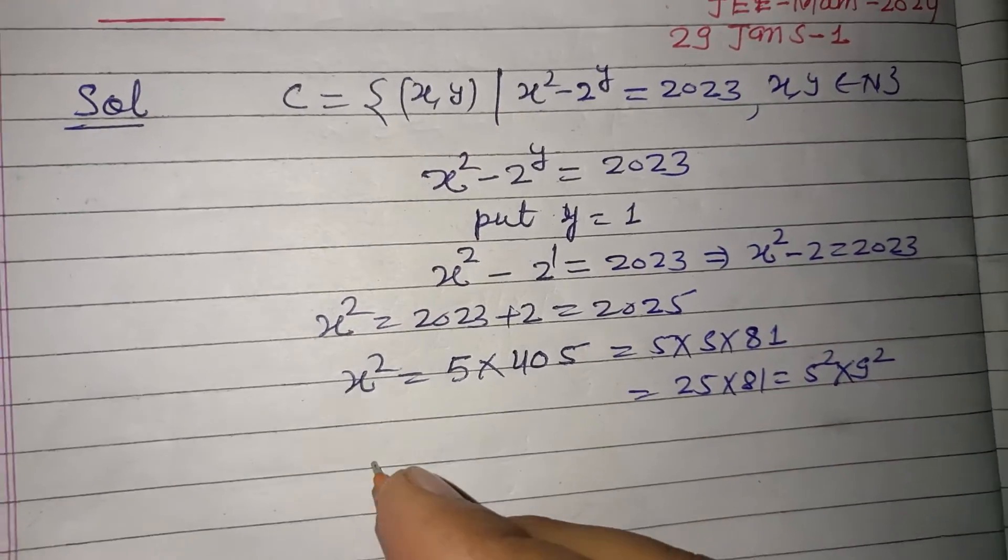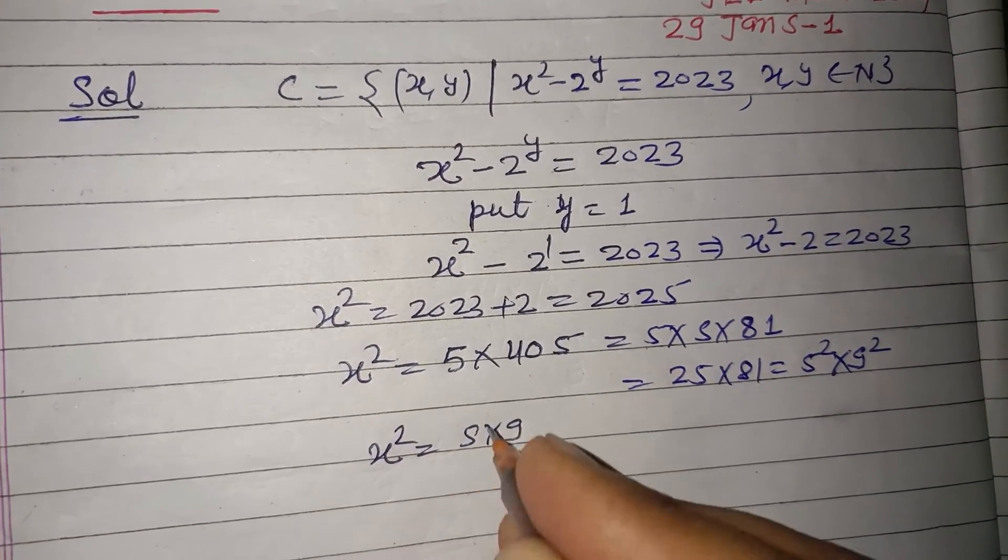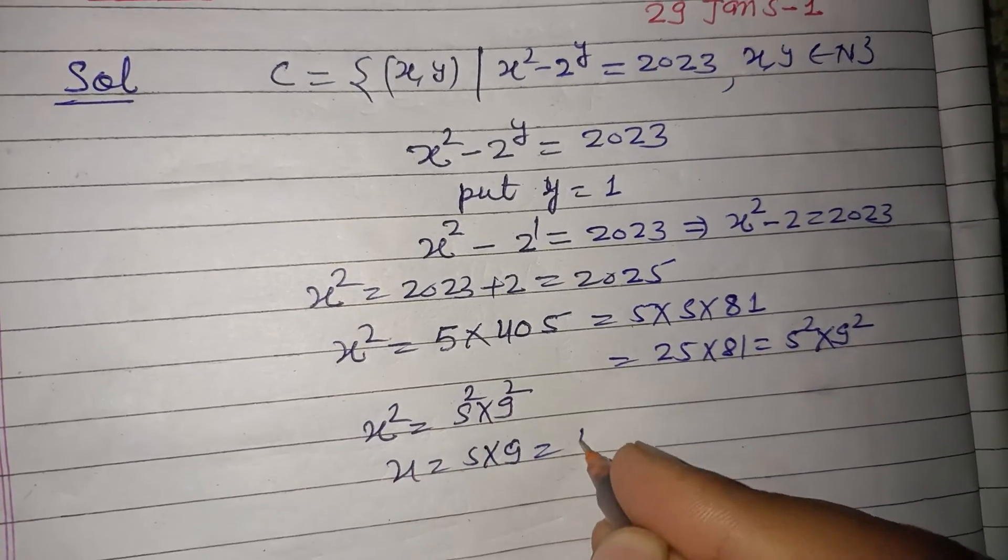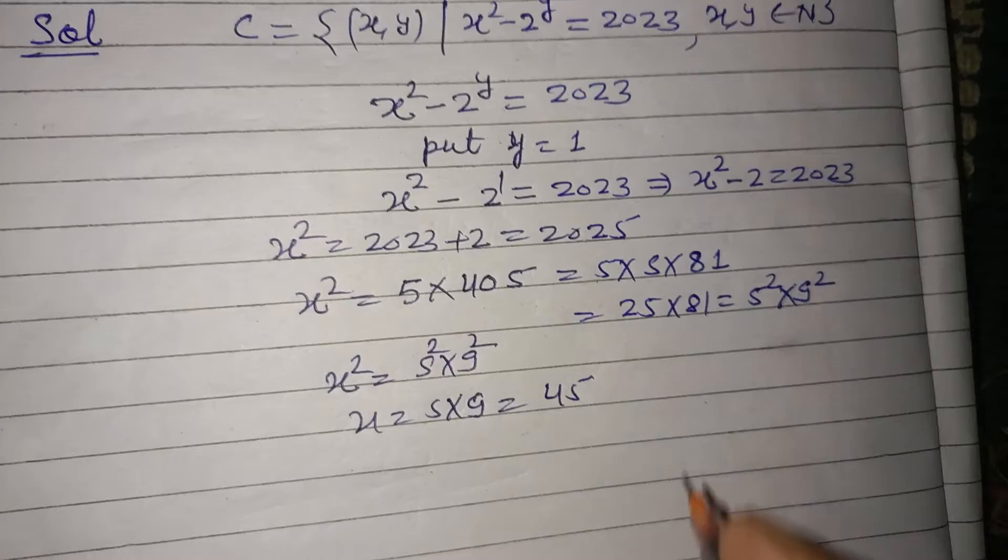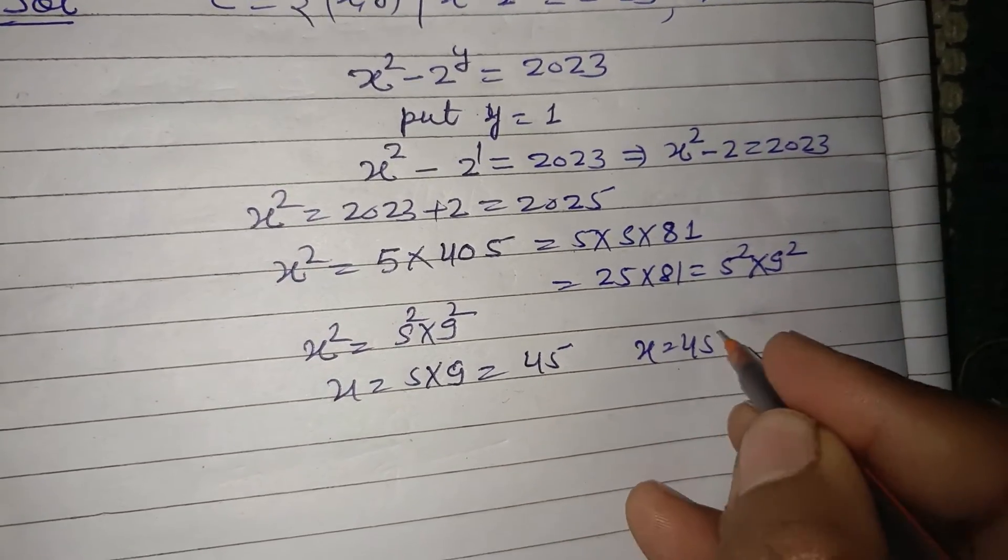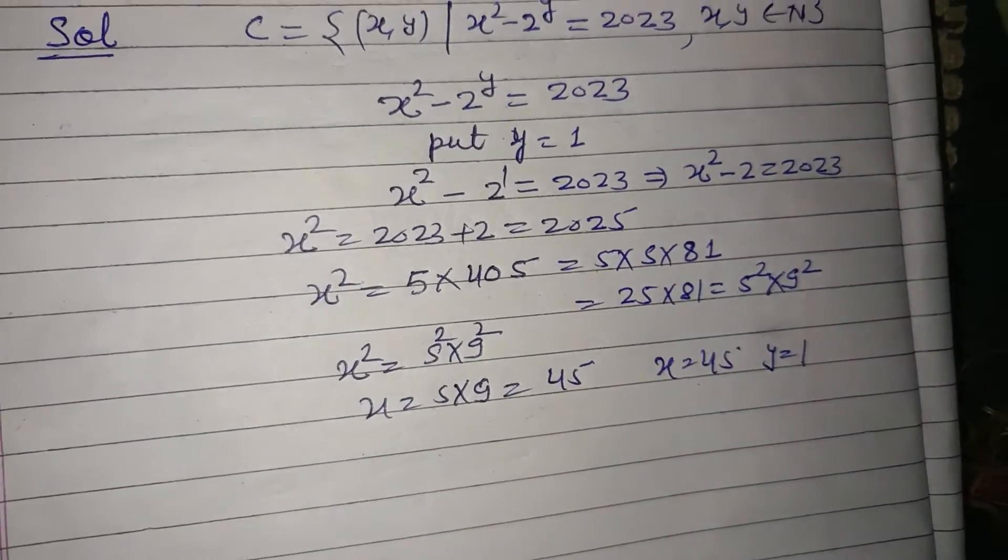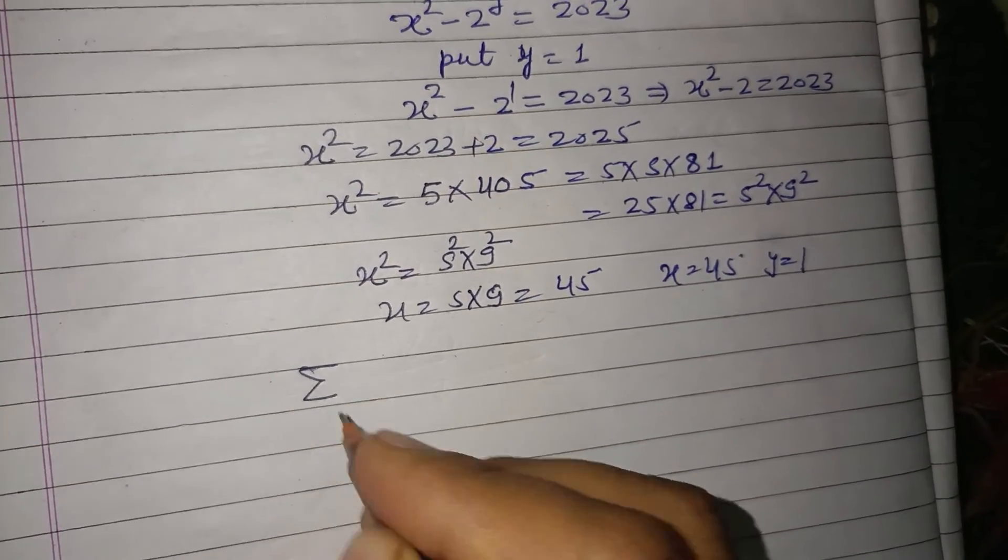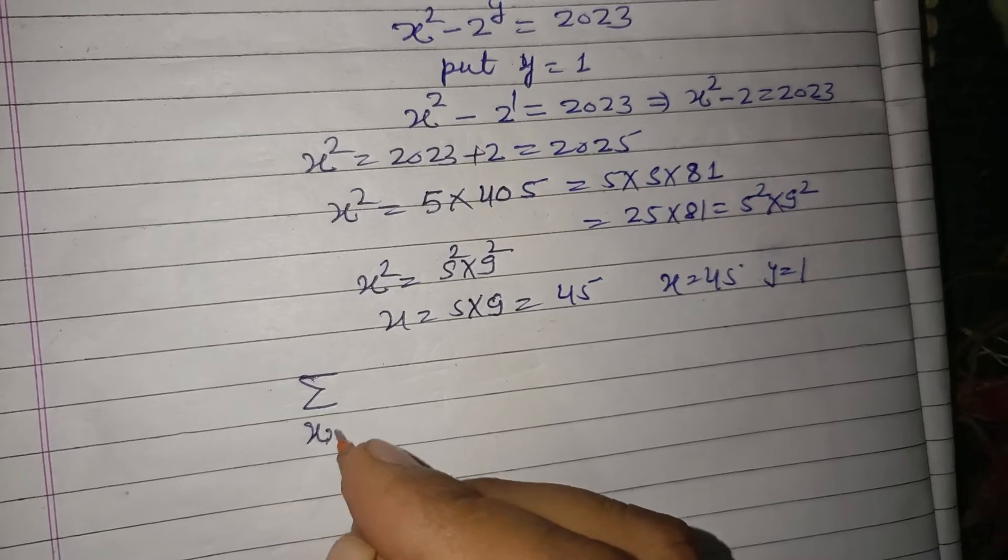So x² = (5 × 9)² = 45². Therefore x = 45 when y = 1. So these are the solutions. Therefore Σ(x+y) for (x,y)∈C equals...